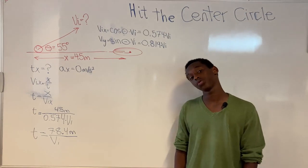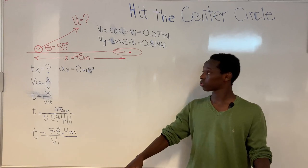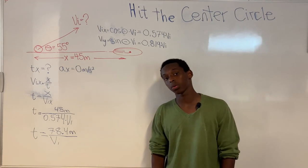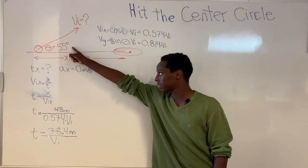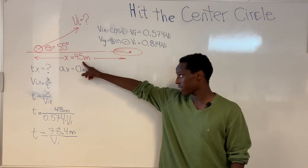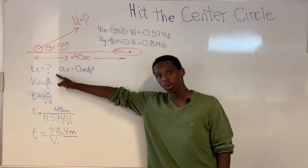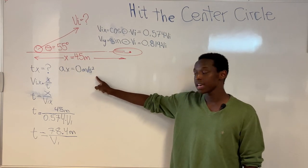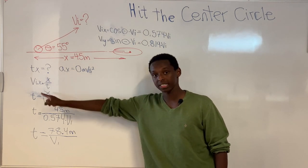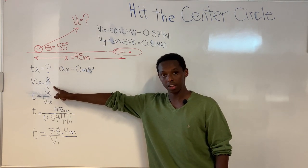Now we're going to find the initial velocity needed for the ball to go from the five-meter box all the way to the center circle. To figure that out, we estimated that the angle we're going to be kicking the ball is 55 degrees, and the distance between the five-meter box and the center circle is 45 meters. So now we're going to find time. Since there's no acceleration in the x-axis, we can use this equation: initial velocity in the x-direction equals distance divided by time.